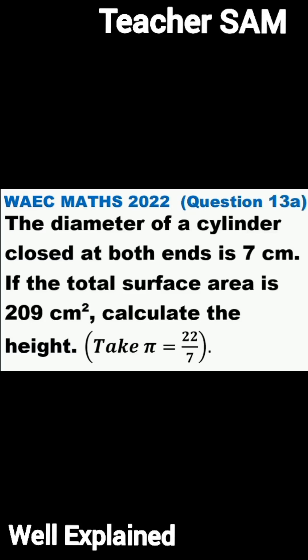The diameter of a cylinder closed at both ends is 7 cm. If the total surface area is 209 cm squared, calculate the height. Take pi to be equal to 22 over 7.